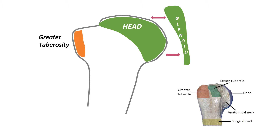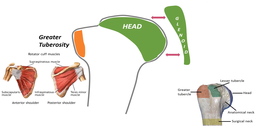The greater tuberosity is larger and lateral. It is the site of insertion for the coracohumeral ligament and three rotator cuff muscles — SIT: supraspinatus, infraspinatus, and teres minor.